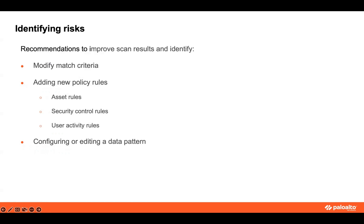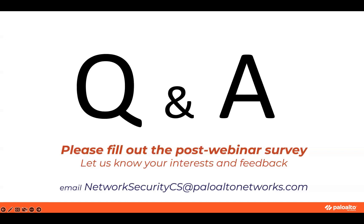Now let's talk about actions we can take to better identify risks and violations within our cloud apps. These suggestions work for all cloud apps, including Office 365. First, make sure that the default policy rules are effective and catch all violations. You can modify match criteria for the policy rules to reduce false positives, create new policies for your specific security risks — especially asset rules, user activity rules, and security control rules — and edit existing data patterns. This concludes our session today. Thank you everyone for attending. We will have our question and answer session now.